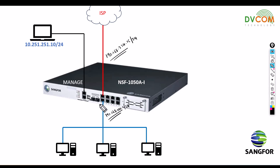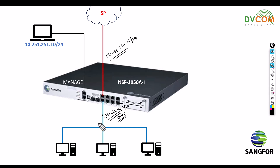Right now what I'm trying to do is configure DHCP, so through DHCP I can assign IP addresses automatically to all my LAN users. If a LAN user wants an IP address, he can talk to my DHCP server and get one. I'm going to enable the DHCP service in my Sangfor firewall.